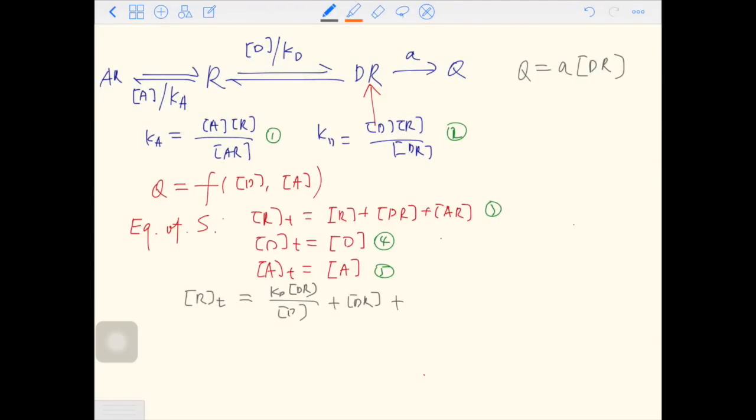So how do we replace AR? We have to use equation number one. AR is A times R over Ka. In this new term, we still have R. So we have to replace the R with Kd times DR over D. So on the right, we have DR in every single term. We can factor it out. DR times Kd over D plus 1 plus A over Ka times Kd over D.